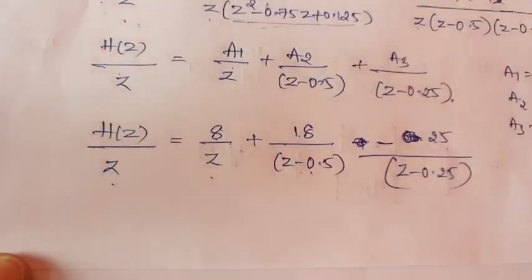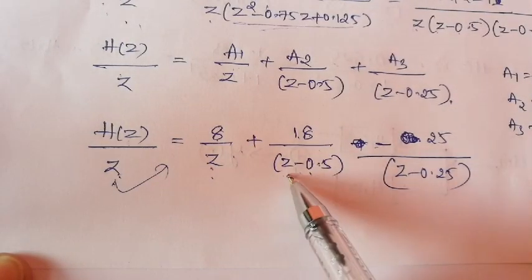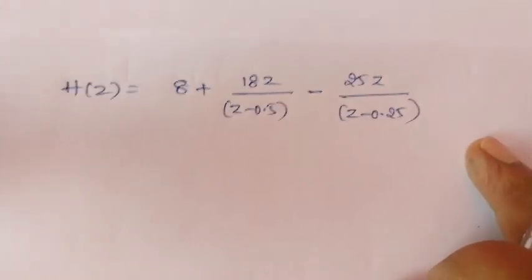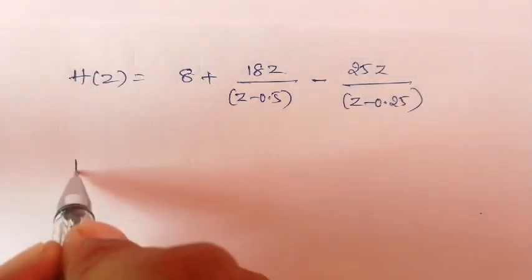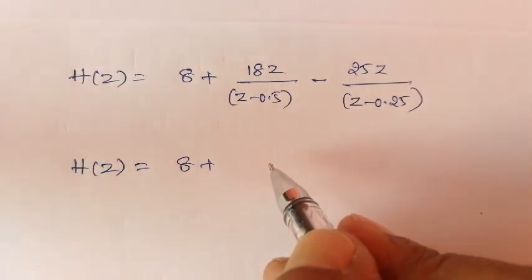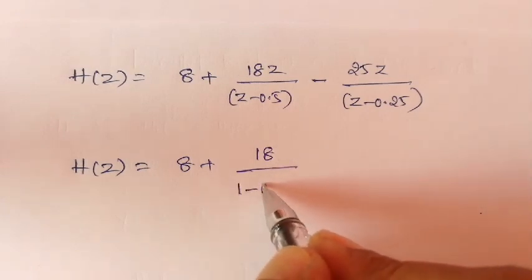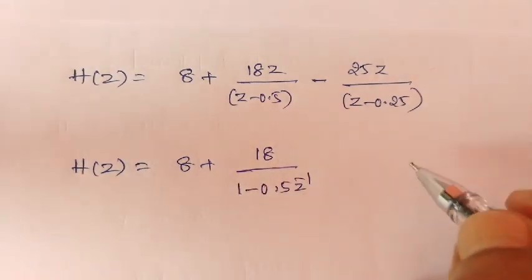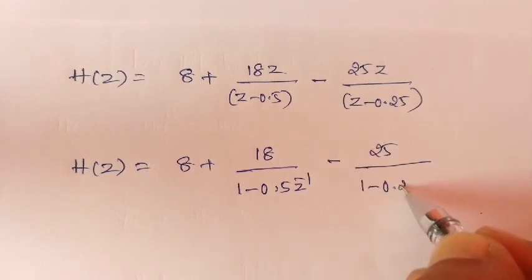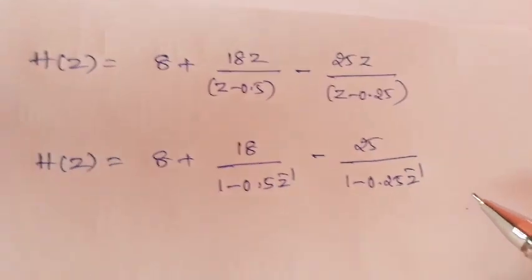Taking z to the right-hand side, z cancels, giving H(z) = 8 + 18z/(z - 0.5) - 25z/(z - 0.25). Expressing in terms of negative powers of z, H(z) equals 8 plus 18/(1 - 0.5z⁻¹) minus 25/(1 - 0.25z⁻¹).